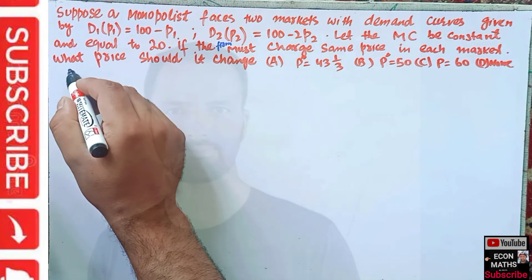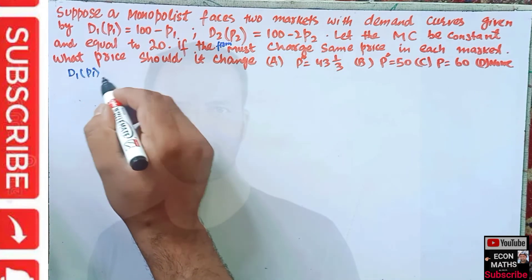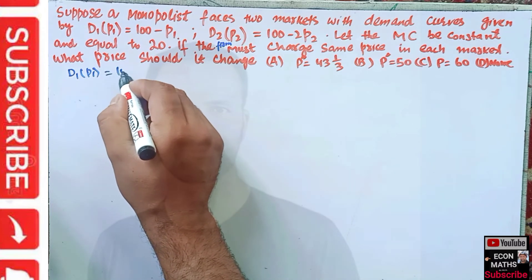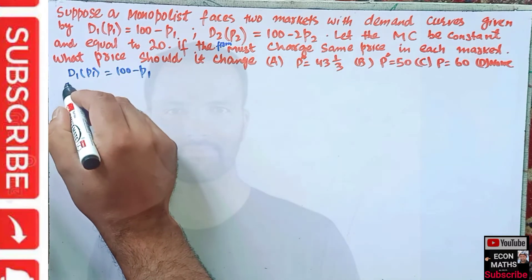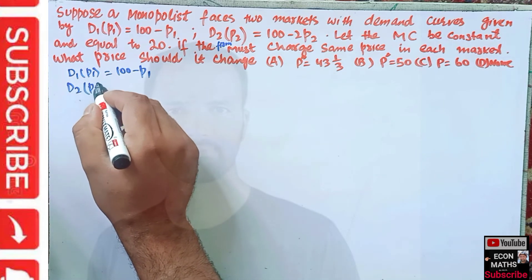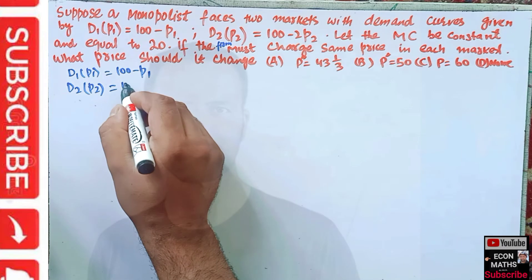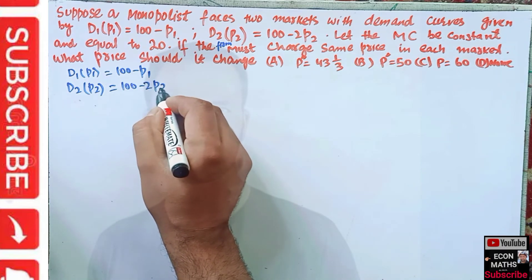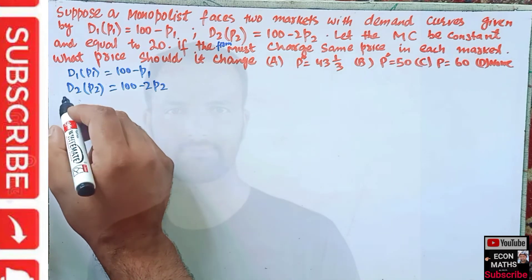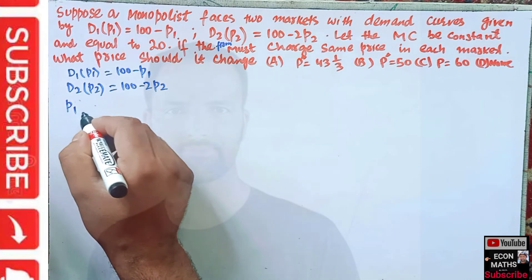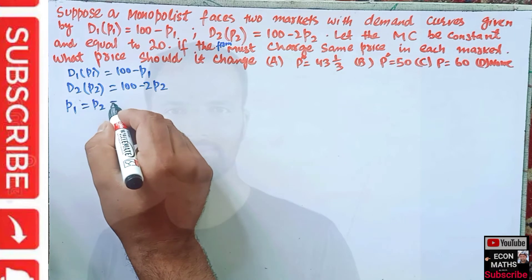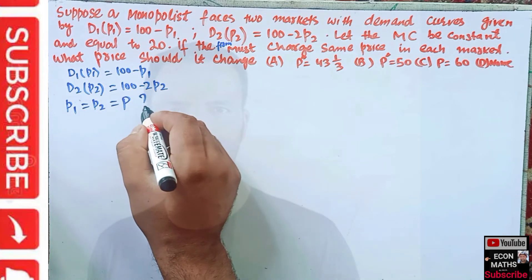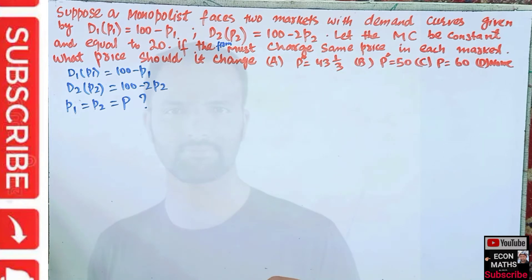Let us review what we are given. The demand function faced by the monopolist in the first market is D1 = 100 - p1, and in the second market it is D2 = 100 - 2p2. We have to find the common price p1 = p2 = p that the monopolist will charge in each market when he does not price discriminate.